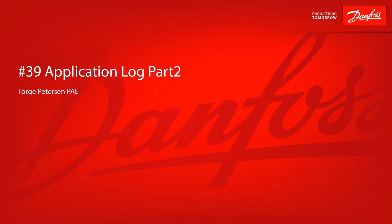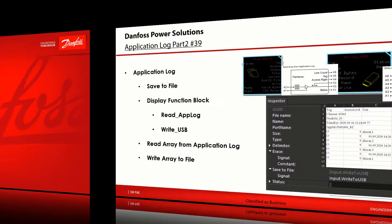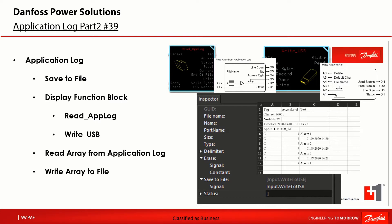Hi and welcome to another short video. My name is Torge Petersen from the Software PAE Group. In this video I would like to show what additional functionalities are available in GUIDE to read the application log and write to your USB memory stick connected to the controller. This video is an addition to a previous video called 'Application Log', video number 6, which shows how to use the app log component, assign signals, and work with the application log editor. Please refer to that video first if you want to learn more about logging data and reading the application log via our service tool.